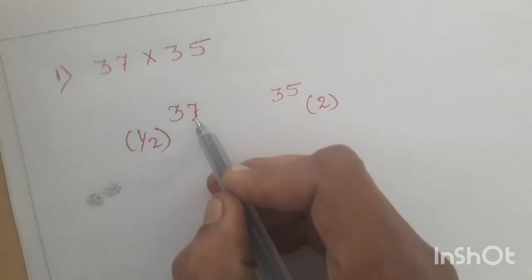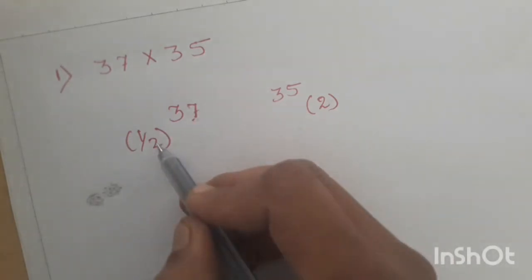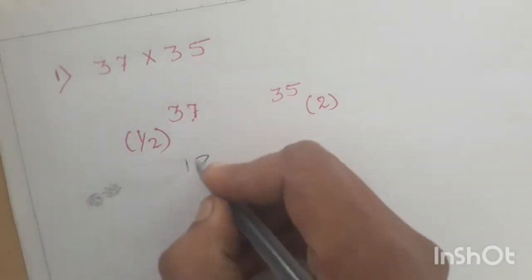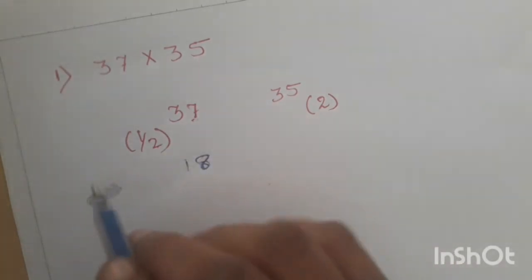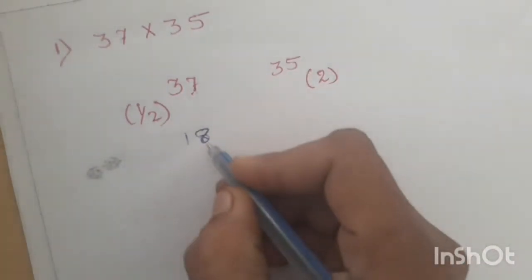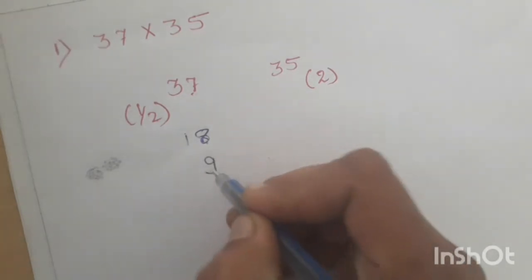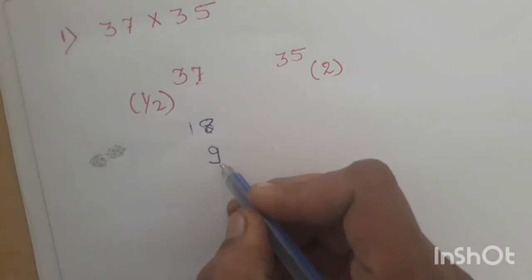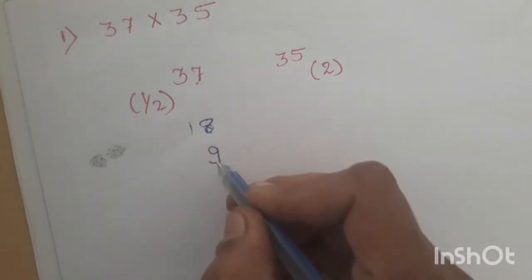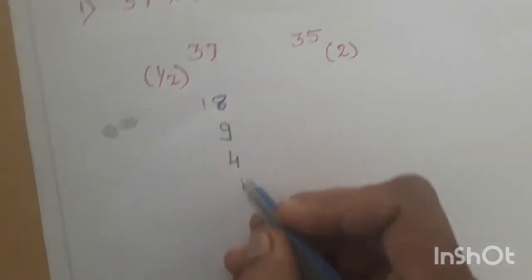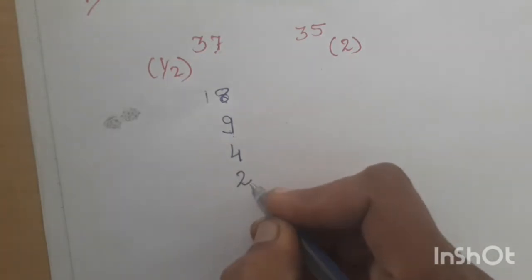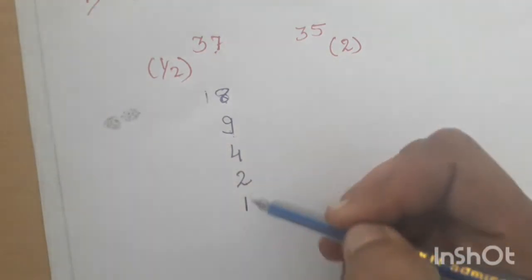Now, 37 is an odd number, so you are going to write only the quotient — you need to ignore the remainder. When 37 is divided by 2, you get 18 as the quotient and 1 as the remainder, which you ignore. Half of 18 is 9. Again, 9 is an odd number, so 9 minus 1 is 8. Half of 8 is 4, half of 4 is 2, half of 2 is 1. Bring this column down to 1.